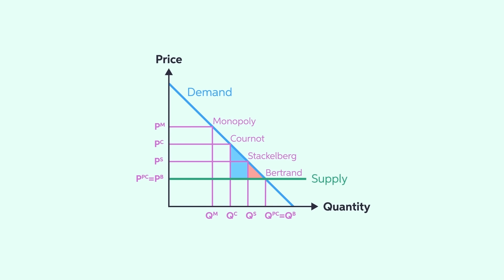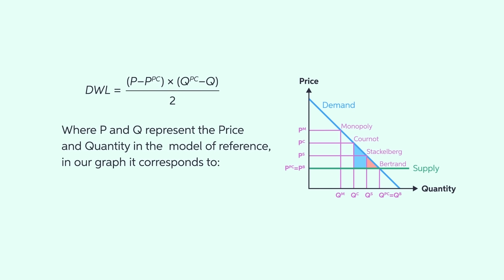That creates a deadweight loss — the fall in total surplus that results from a market distortion. The formula shows how you can calculate the deadweight loss under each market structure when demand is linear and supply is horizontal. By doing that, you will see that a Cournot duopoly will generate the highest level of deadweight loss, graphically corresponding to some of the shaded areas — blue and red — when the marginal cost is zero. It is followed by a Stackelberg duopoly, whose deadweight loss corresponds to the red area. A Bertrand duopoly instead is socially efficient since it replicates the outcomes of a perfectly competitive market.